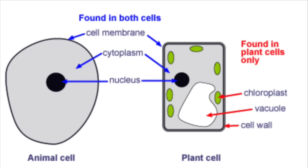Now we're going to look at the plant and animal cell. Let's start by listing the organelles that both animal and plant cells share. They both have cell membranes, cytoplasm, nucleus, ribosomes, and mitochondria. In terms of the plant cell, there are a few extra organelles: the cell wall, the vacuole, and also chloroplasts.